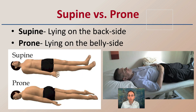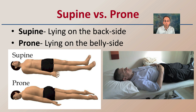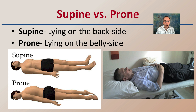Then we have potentially discovering a body. It might be in the supine or the prone position. Supine is laying on the backside, as we can see evidenced here, and prone would be laying on the belly side. So when describing how a potential victim was found at a crime scene, these terms will often be used if the victim is lying horizontally.